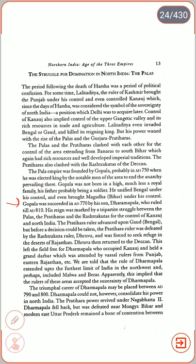The Pratihara ruler advanced upon Gauda (Bengal), but before a decision could be taken, the Pratihara ruler was defeated by the Rashtrakuta ruler Dhruva and was forced to seek refuge in the deserts of Rajasthan. Dhruva then returned to the Deccan. This left the field free for Dharampala, who occupied Kannauj and held a great Darbar attended by vassal rulers of Punjab, Eastern India, etc. The rule of Dharampala extended to the furthest limits of India in the northwest and perhaps included Malwa and Berar, implying that rulers of these areas accepted his suzerainty. The triumphal career of Dharampala may be placed between AD 790 and AD 800, but he could not consolidate his power in North India as the Pratihara power revived under Nagabhatta. Dharampala fell back and was defeated near Mongir.